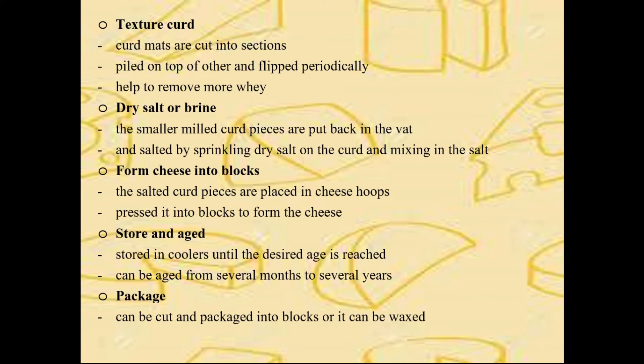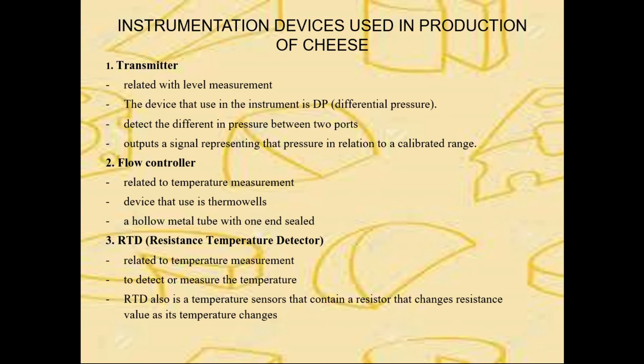Next, I will pass the presentation to Nur Adiba binti Khairul Azhar. She will talk about instrumentation devices used in the production of cheese. For this cheese processing, we focus on three instruments which are flow controller, temperature measurement and transmitter. The important instrument used in cheese processing is the transmitter, which is related to our main topic of level measurement. The device used is a DP, which is a differential pressure instrument. This DP transmitter can detect the difference in pressure between two ports and outputs a signal representing that pressure in relation to a calibrated range.